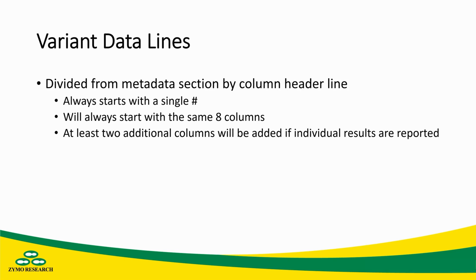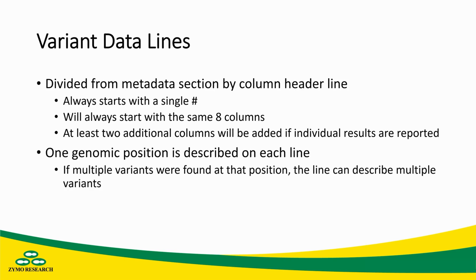The column header line will be denoted by a single pound sign. It will always start with the same eight columns, and if there are individual results being reported, there will be at least two columns added. In the variant data lines, one genomic position is described on each line. If there are multiple variants found at that position — either within an individual or across individuals if multiple individuals are being reported — then that line may have multiple alternate alleles.